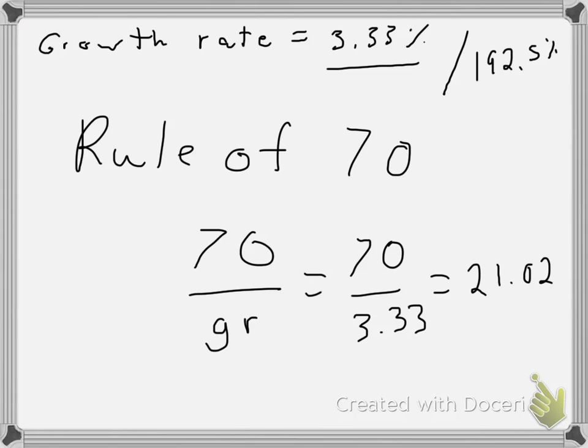We know that it will take about 21 years for our economy to double. And at that time, if we're holding everything constant, ceteris paribus, and we had an economy of $15 trillion, in 21 years at a rate of 3.33%, we can expect it to be $30 trillion.